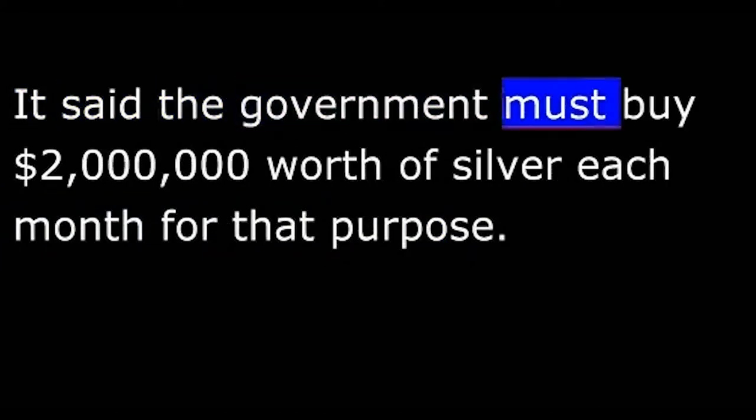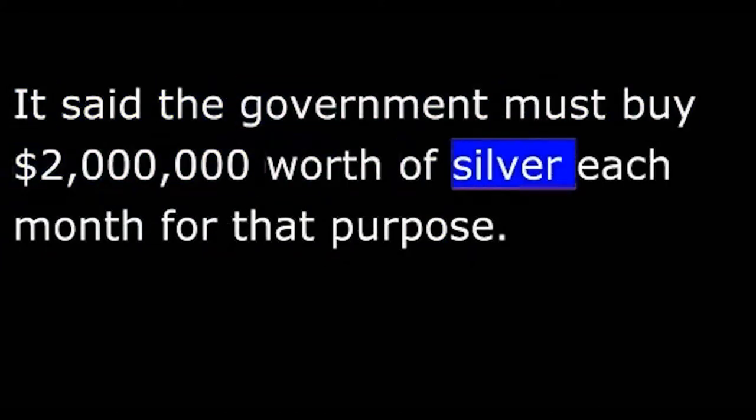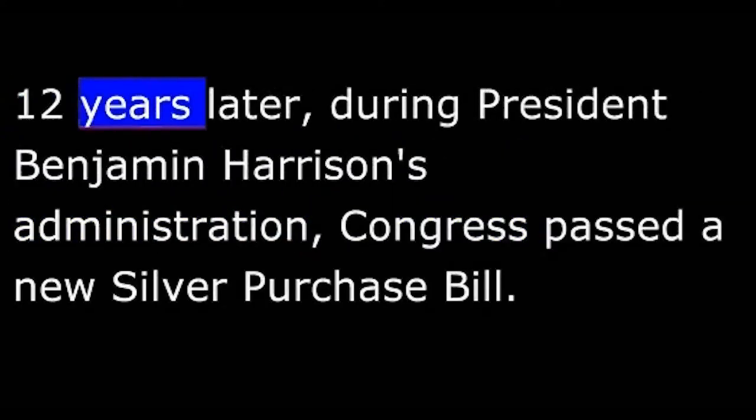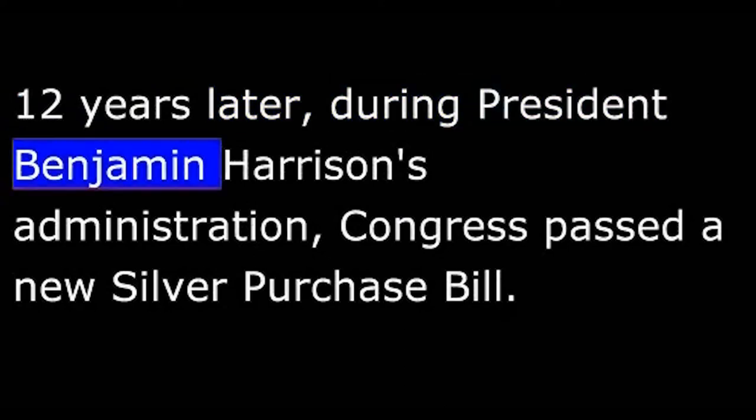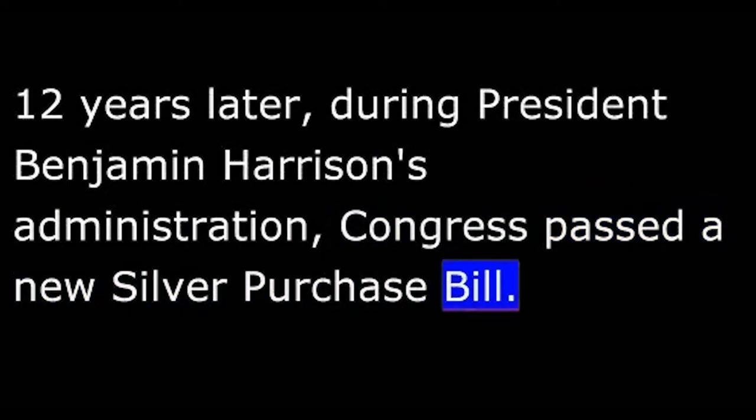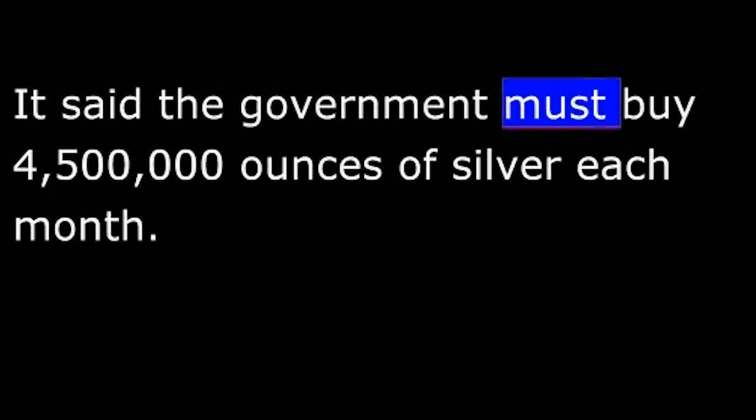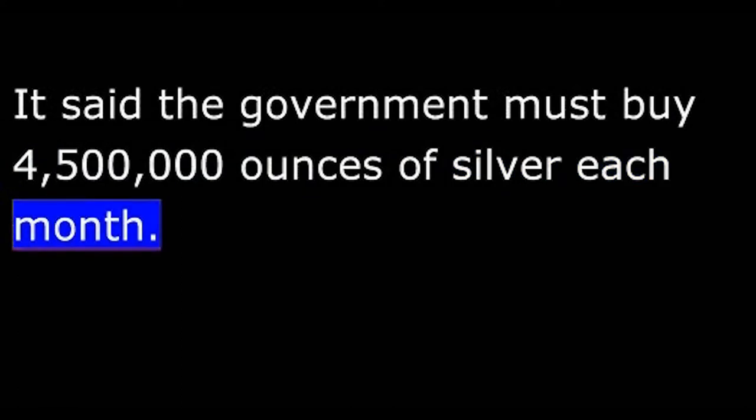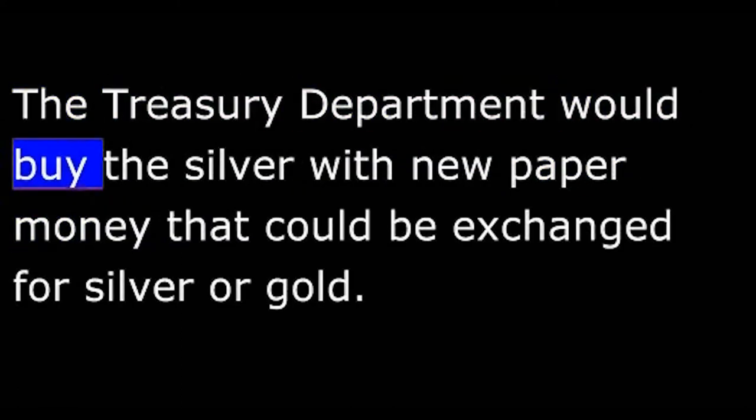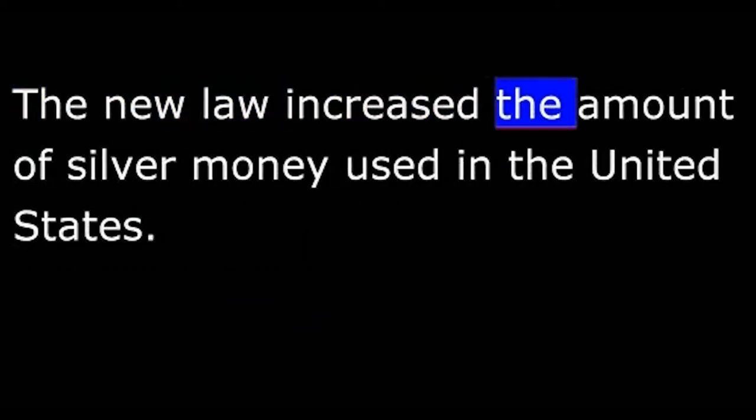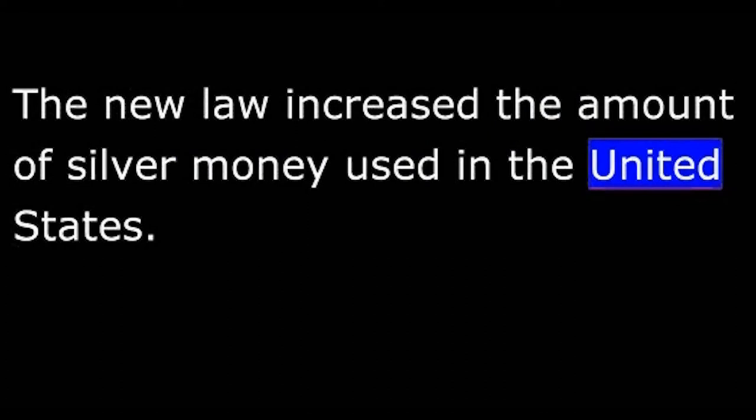It said the government must buy $2 million worth of silver each month for that purpose. Twelve years later, during President Benjamin Harrison's administration, Congress passed a new silver purchase bill. It said the government must buy 4.5 million ounces of silver each month. The Treasury Department would buy the silver with new paper money that could be exchanged for silver or gold. The new law increased the amount of silver money used in the United States.